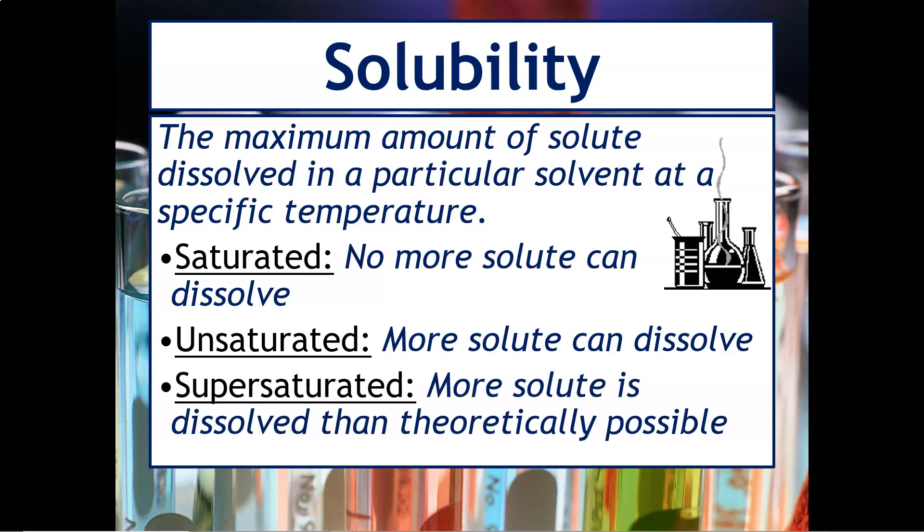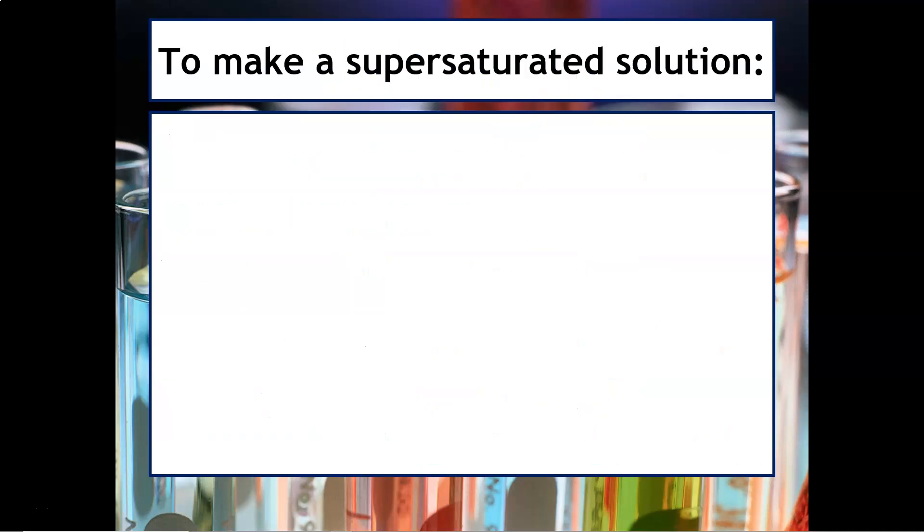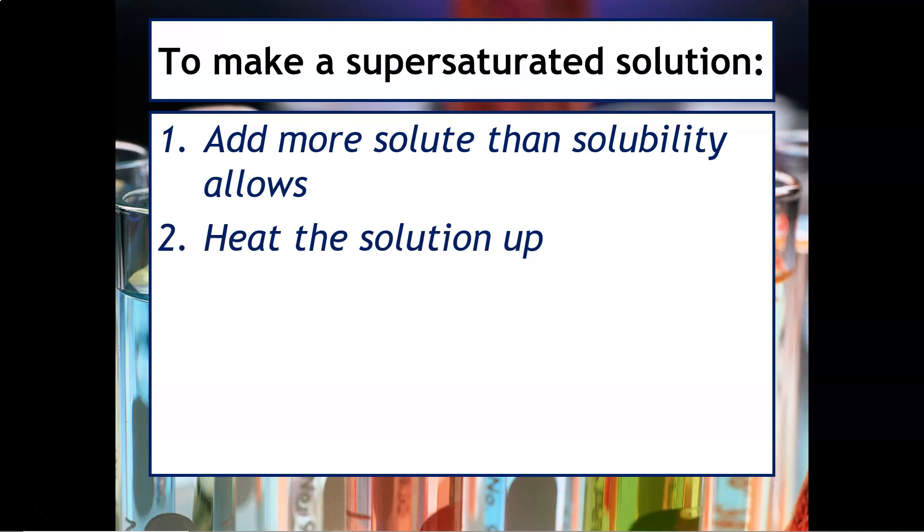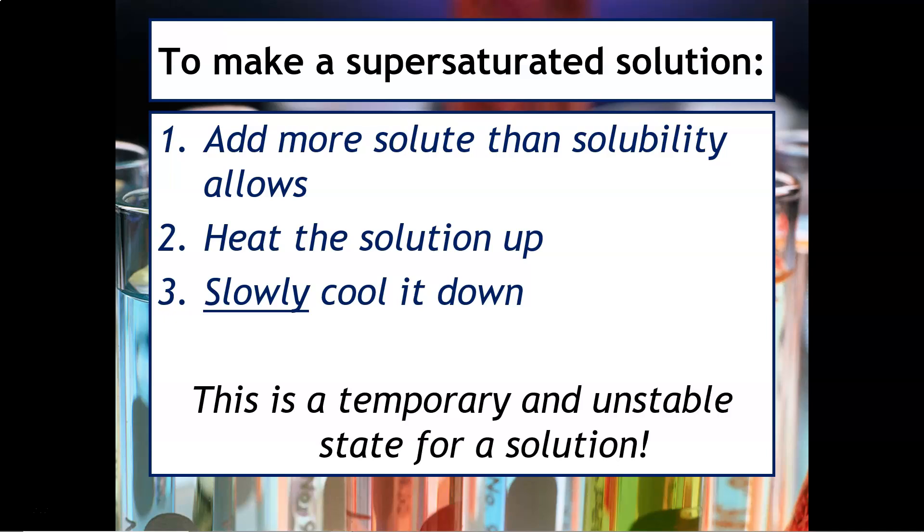But one term you might not be familiar with is a supersaturated solution. A supersaturated solution is where you have more solute dissolved than is theoretically possible. So let's talk about how to make one. What you do is you have to add more solute than the solubility of the solvent allows, and then you heat the solution up like over a Bunsen burner or on a hot plate. And then finally you have to slowly cool it down, because you don't want to have any of that solute come out of solution. This is often referred to as a very temporary and unstable state for a solution, so any disturbance will actually cause the solute to precipitate out.